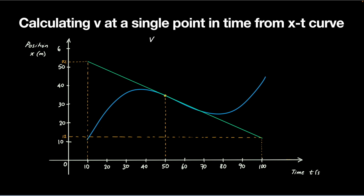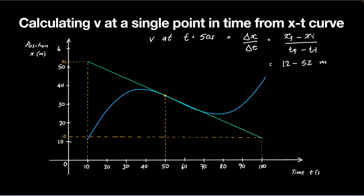I can work out the rise over run for that whole extended line. The velocity at t equals 50 seconds is delta x over delta t for the green tangent line — that is, final position minus initial position, divided by final time minus initial time. My final position is 12, my initial position is 52 meters, divided by 100 minus 10 seconds. That gives negative 40 over 90 meters per second, which is around negative 0.44 meters per second. The tangent line slopes downward so the result is negative, and the slope of that tangent line tells us the instantaneous velocity at that point.